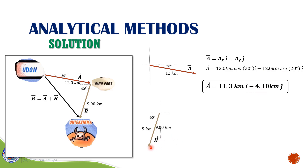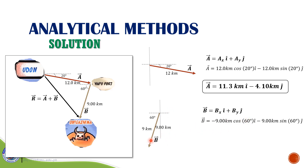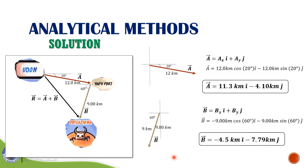For vector B, which is in the third quadrant, we expect both the X component and the Y component to be negative. Vector B equals minus 9 cosine 60 degrees i-hat minus 9 sine 60 degrees j-hat. So B equals minus 4.5 i-hat minus 7.79 j-hat. We have now expressed vector A and vector B in terms of their components.